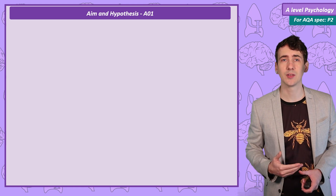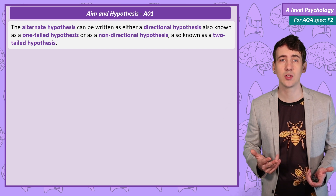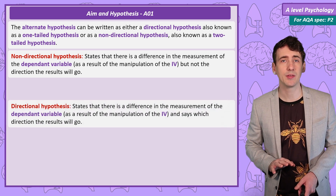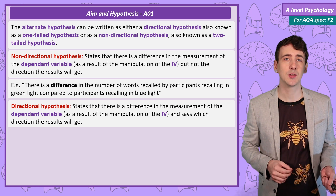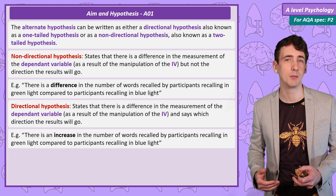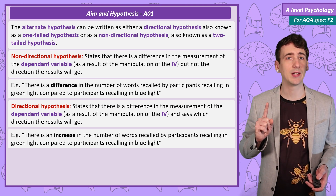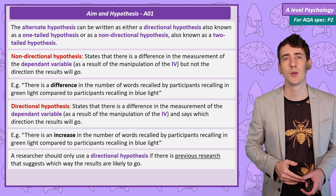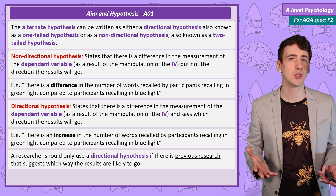We know the difference between the null and the alternate, but the alternate can be written in two ways. We can give a directional hypothesis, also known as a one-tailed, or a non-directional hypothesis, also known as a two-tailed hypothesis. A non-directional hypothesis states that there is a difference, but not which way the direction will go. A directional hypothesis states that there is a difference and how the results will go. For example: 'There is a difference in the number of words recalled by participants recalling in green light compared to participants recalling in blue light' is non-directional. Whereas 'There is an increase in the number of words recalled by participants recalling in green light compared to participants recalling in blue light' is directional — by changing 'difference' to 'increase', it specifies the direction. The researcher will use a directional hypothesis if there is previous research indicating the direction the results will go, for example, if significant research showed that being surrounded by green plants improves recall.